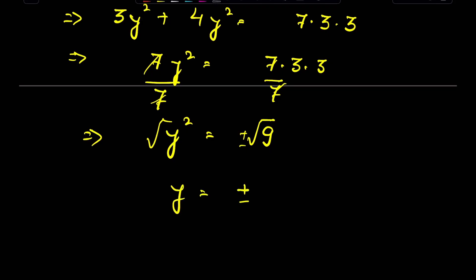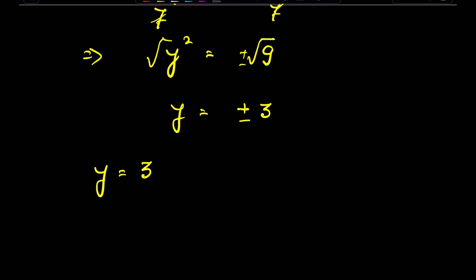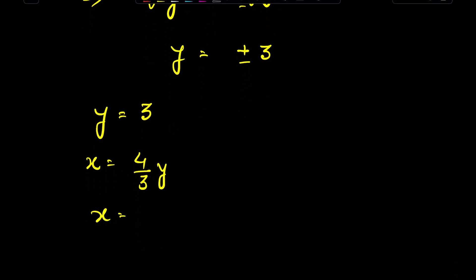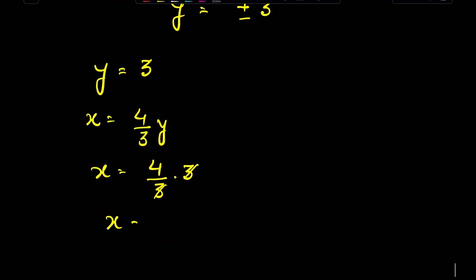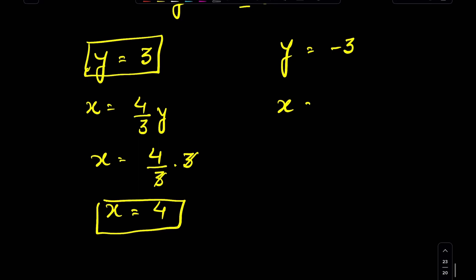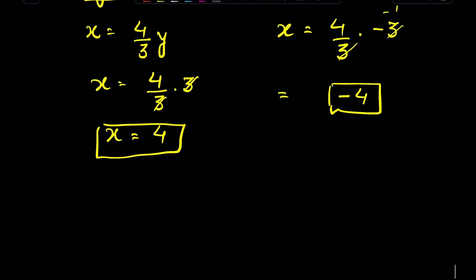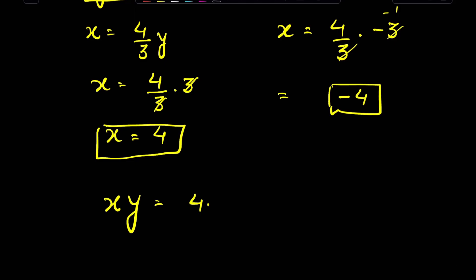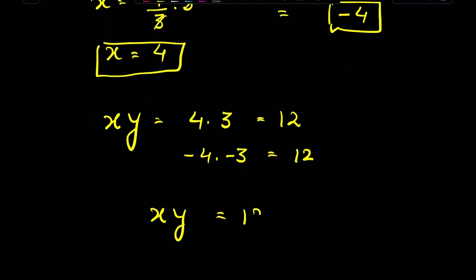So y is equal to plus or minus 3. When y is 3, x is equal to (4/3) times 3, so x equals 4. When y is minus 3, x is equal to (4/3) times minus 3, so x equals minus 4. In both cases, xy equals 4 times 3 equals 12, or minus 4 times minus 3 equals 12. Therefore xy is equal to 12. This is our answer.